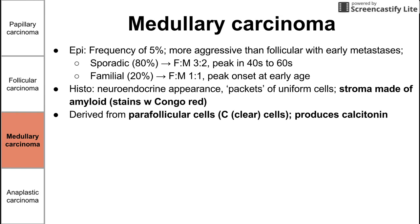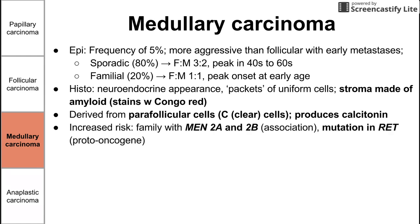Medullary carcinomas are derived from parafollicular cells — also called C cells — unlike papillary and follicular. The parafollicular cells produce calcitonin, so we measure calcitonin to track these cancers rather than thyroglobulin. There's an increased risk with MEN 2A and MEN 2B associations, and also with mutations in the RET proto-oncogene.